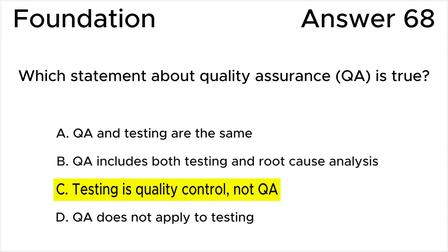Quality assurance (QA) is a process-oriented preventive approach. Answer B is invalid because testing is a form of quality control (QC), not a form of quality assurance (QA). Answer D is invalid because quality assurance (QA) does apply to testing in the context of software development as a general concept. Quality assurance (QA) is a process-oriented preventive approach of testing.